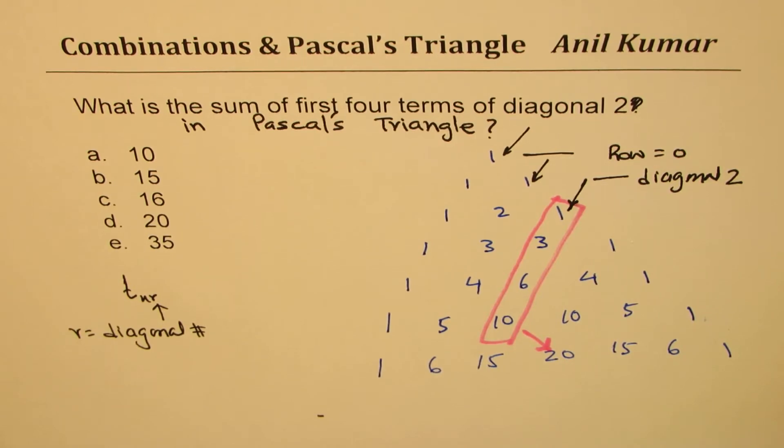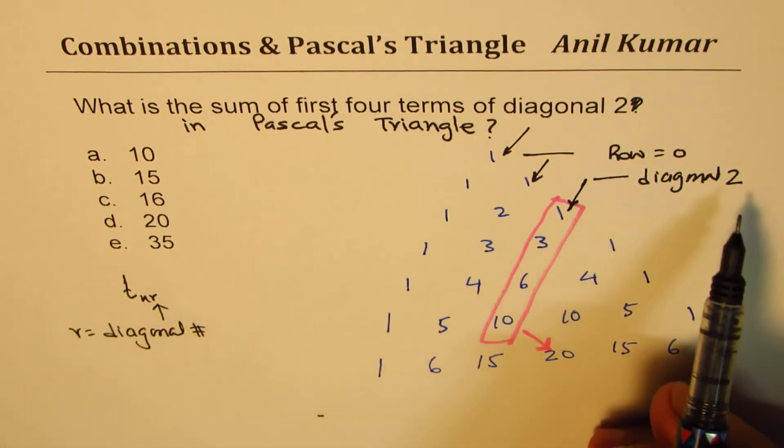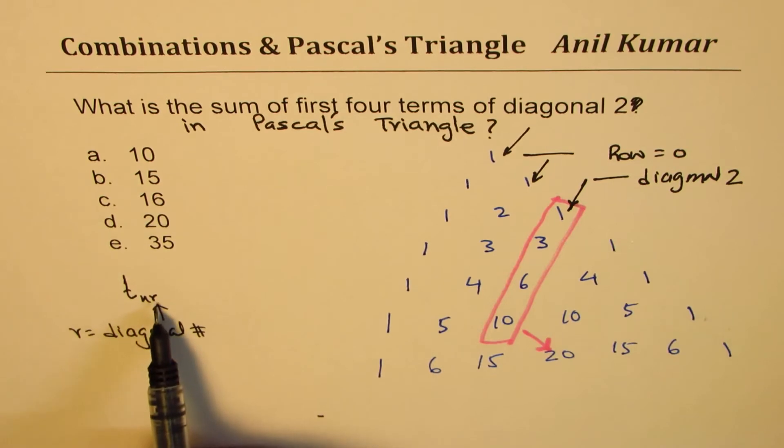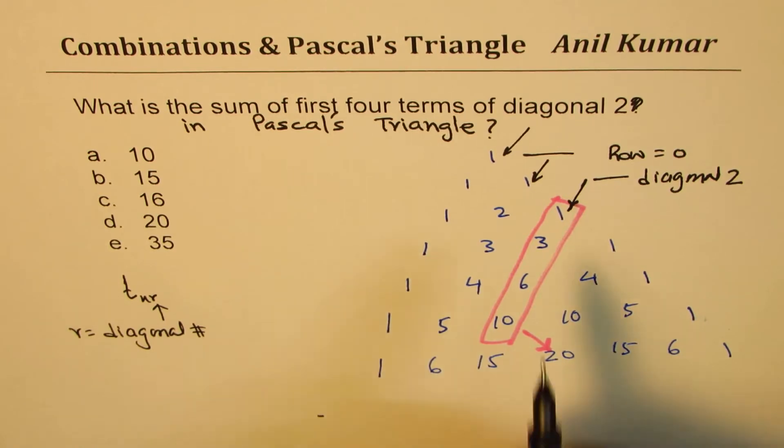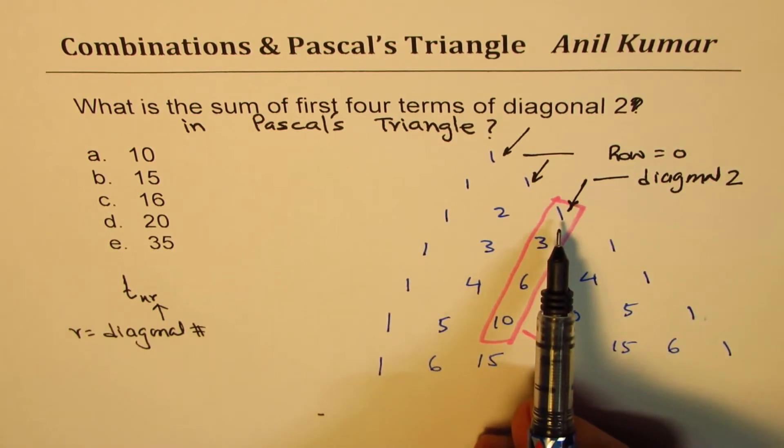Perfect. Now easy method here is: we're talking about second diagonal, right? So R is two, does make sense to you, right? R is two. So, and as you can see, row number is also two here. Is it okay? N is also two, correct?